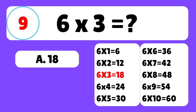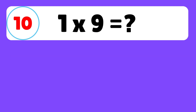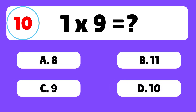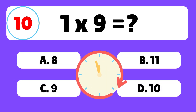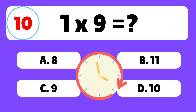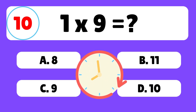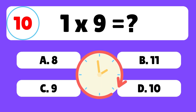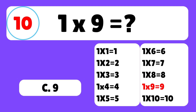Question 10. What is 1 times 9? The answer is C. 1 times 9 is equal to 9.